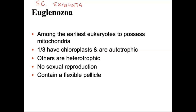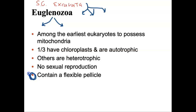Within Excavata there are three subcategories: the Diplomads, the Parabasolids, and the Euglenozoans. Within Euglenozoa, this splits down into two further subcategories known as Euglenoids and the Kinetoplastids. The defining feature to remember for Euglenozoa is the pellicle — chloroplast, heterotrophic, etc. will vary based on subcategories. But the pellicle is a big defining feature, as well as being the earliest eukaryotes to have a mitochondria.